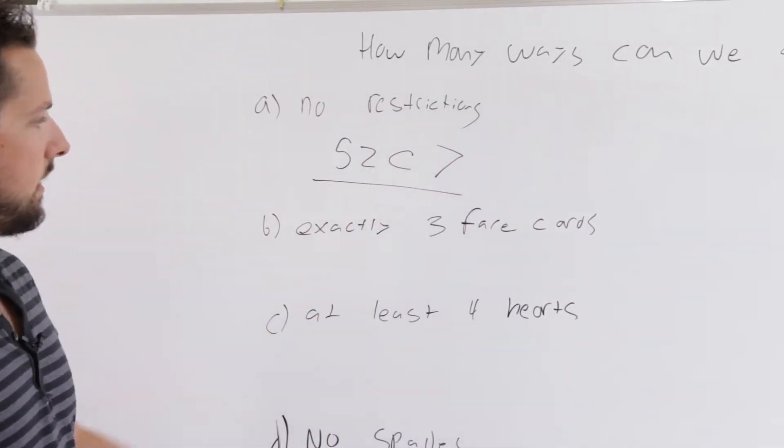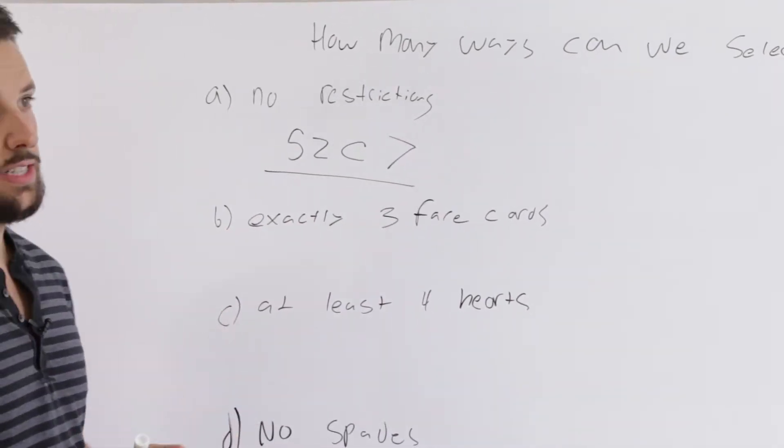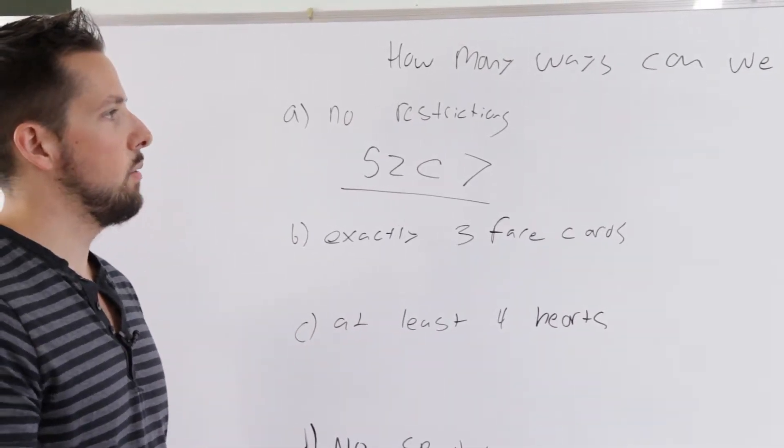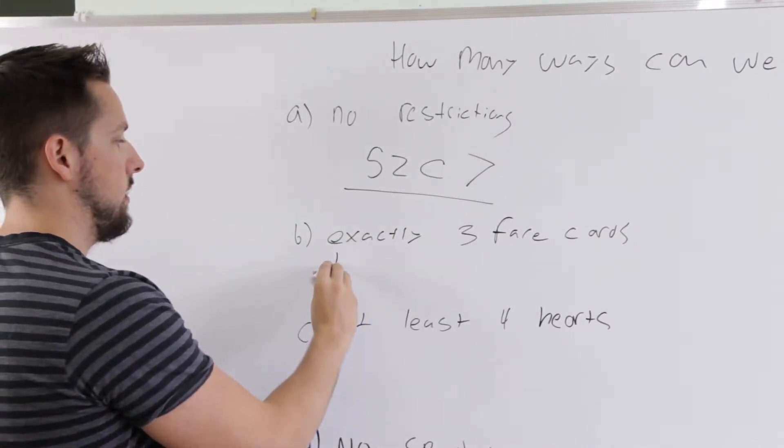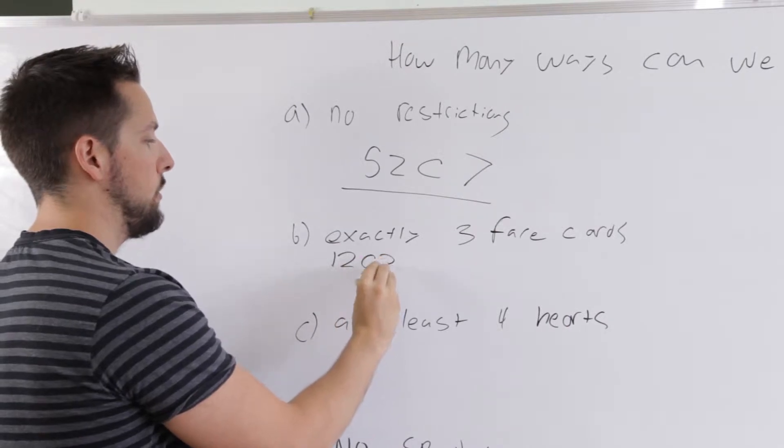The next one says we need exactly three face cards. So how many face cards are in a deck? There's 12. Four of each type and there's Jack, Queen, King. So we need to pick three face cards from the 12 total face cards. So that's 12 choose three.